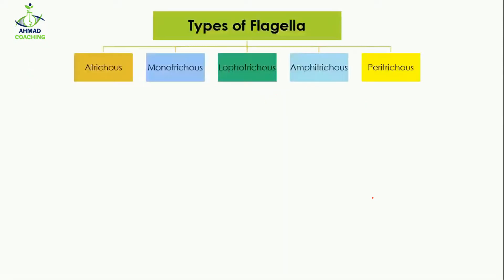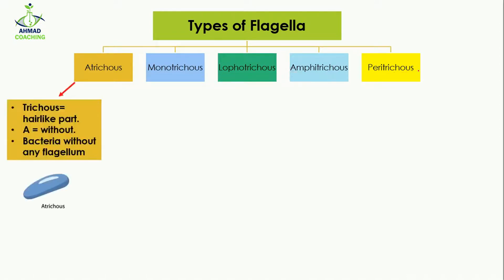There are five main types of flagella present in bacteria: atrichus, monotrichus, lophotrichus, amphitrichus, and peritrichus. The word 'trichus' means hair-like part, so whenever it is used it refers to flagella or hair-like structures. The prefix 'a' means without, so atrichus refers to bacteria which do not have any flagellum — as you can see, atrichus bacteria contain no flagella at all.